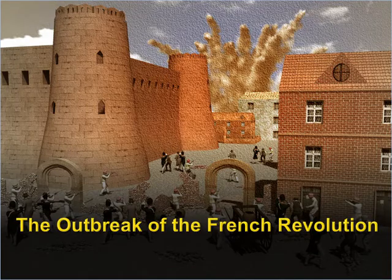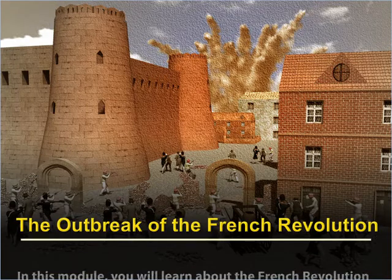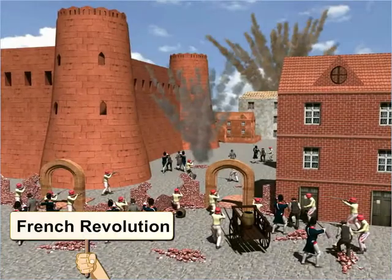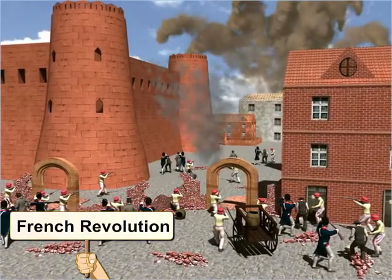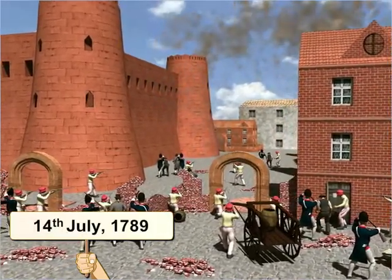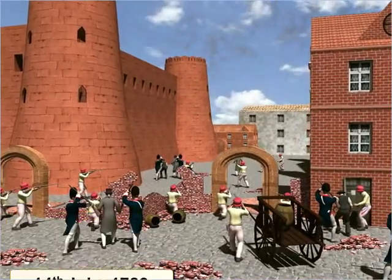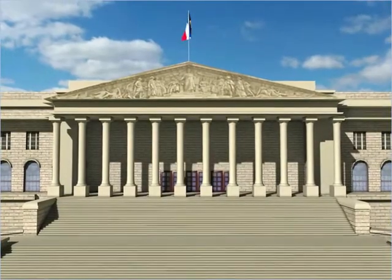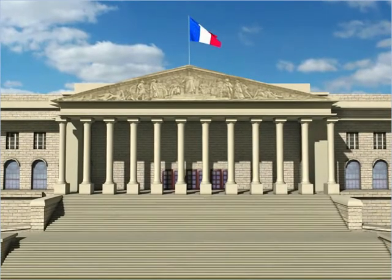The outbreak of the French Revolution. In this module, you will learn about the French Revolution that led to the end of monarchy in France. The French Revolution is a very important event in the history of France. It started on the 14th of July in 1789 and spread across many years, during which several radical changes took place in the political organisation of France.